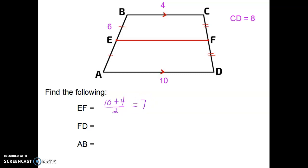My next segment is segment FD. Because the median bisects this side, I can find out what the length of FD is given the information in the upper right-hand corner that segment CD equals 8. That also means that segment CF should equal 4 as well.